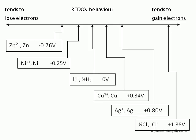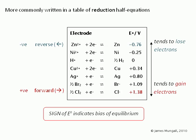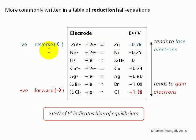Listing a range of standard electrode potentials shows that half cells with negative values tend to lose electrons, whereas those with positive values tend to gain electrons. More commonly these values are written in a table of reduction half equations, i.e. with the electrons on the left-hand side in the equilibrium. Negative values indicate species which tend to lose electrons, and so in terms of this equilibrium, this corresponds to the reaction going in the reverse direction — providing electrons. So negative means going in the reverse direction.